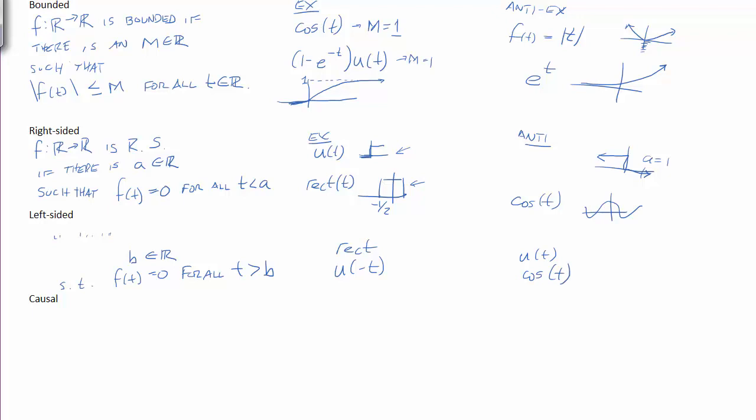Now, causal signals are a subset of right-sided signals. All causal signals are right-sided. But the special bit for causal is a is the origin. Or we're talking about they are 0 before the origin, t equals 0 point. So an example of this is our friend, the unit step. The unit step is 0 to the left of the origin. So that makes it a causal signal.